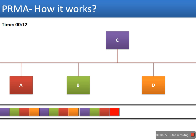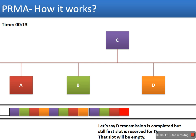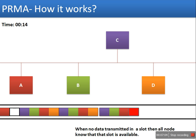Now, how does this protocol stop a reservation? In every frame, the first slot is reserved for station D. When D's transmission is done and D has nothing more to send, the first slot will be empty. Whenever a slot is empty, all other nodes know that the slot is now available. In the next frame, the first slot will be considered unreserved, and other nodes can try to send their data in that slot.